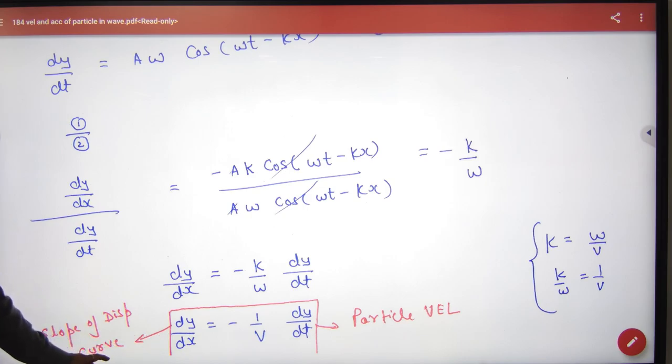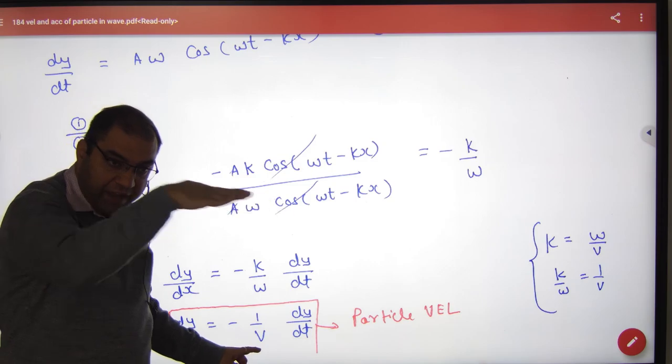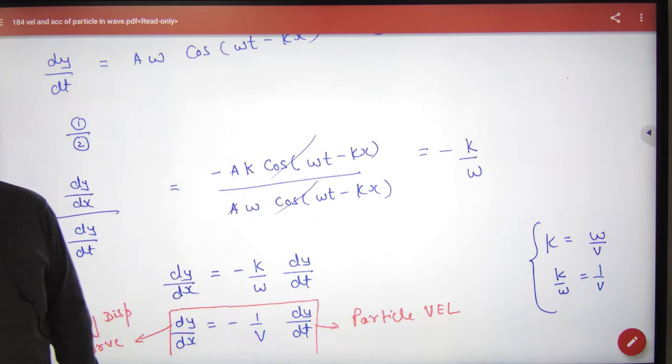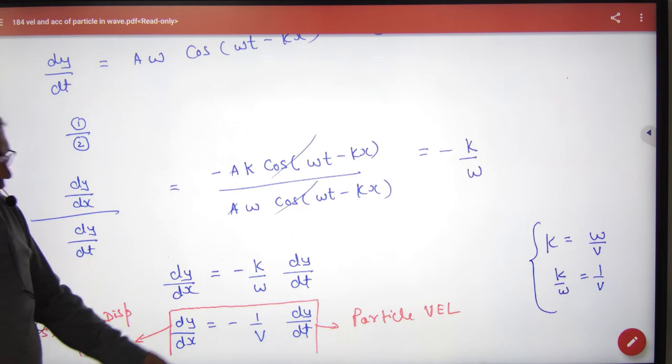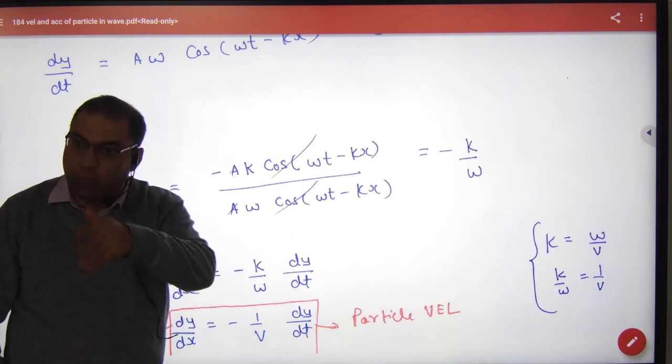What is the slope? The slope of the wave. The wave velocity, write it. This is wave velocity. And what is the slope? Particle velocity. Because the wave is going right, particle is up and down.